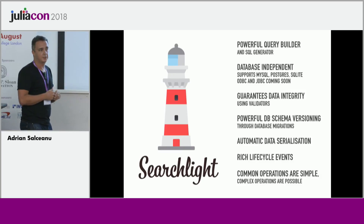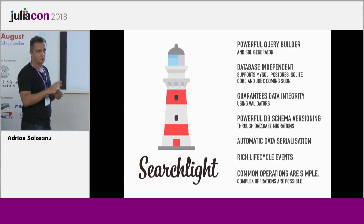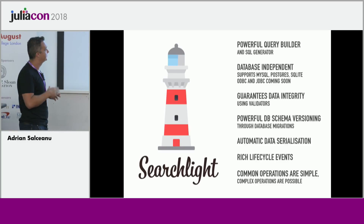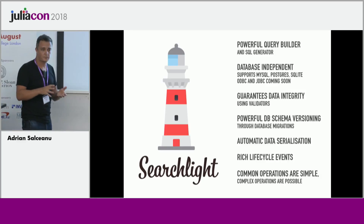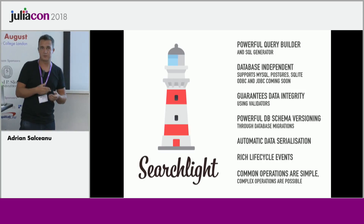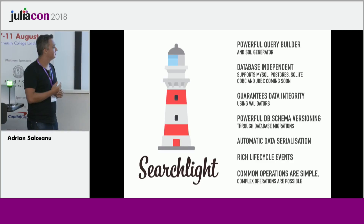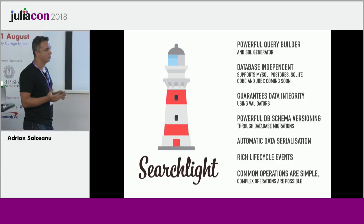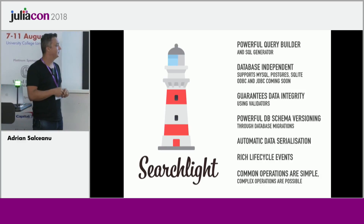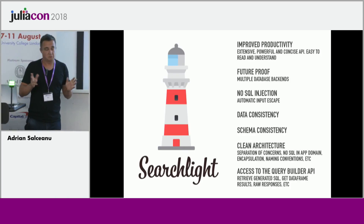It performs automatic data serialization — for example, if we have a field that's a dict or another type, we can tag it and tell Searchlight to store it as JSON serialized, and then it takes care of retrieving and rebuilding the data. It also provides rich lifecycle events, meaning we can define callbacks and hook into the lifecycle of the Searchlight object — for example, before saving or after recreating the object — and perform transformation of the data. It tries to make common operations simple and complex operations possible, providing access to a high-level API but also to lower-level access to underlying DataFrames, the query builder, and SQL queries so it can be chained with other tools in the data processing pipeline.